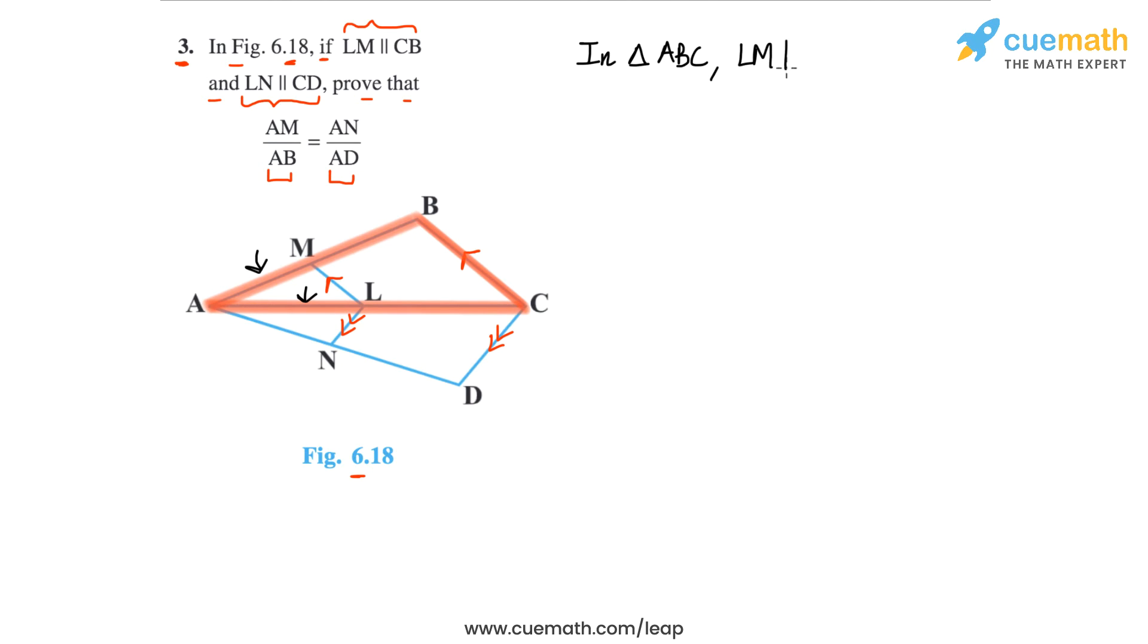LM is parallel to CB. This is basically given to us, and because of this, we have AM by AB is equal to AL by AC. And the reason is the basic proportionality theorem. And we can label this equation 1.